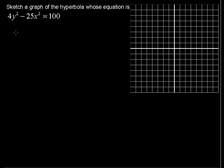Sketch a graph of the hyperbola whose equation is 4y squared minus 25x squared equals 100.